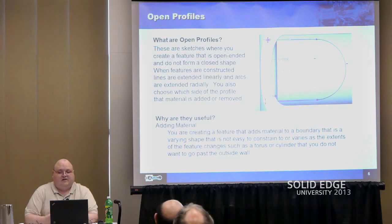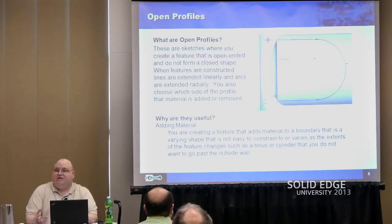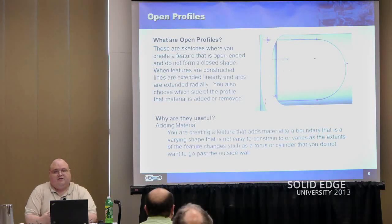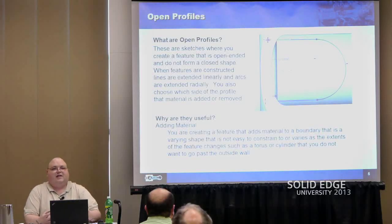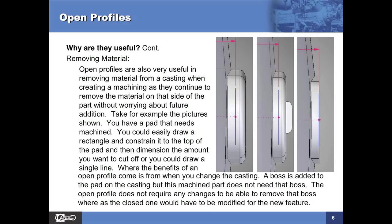When adding material, you can use open profiles to add material that goes to a boundary of varying shape that might not be easy to constrain—such as when you're going up against the end of a torus or a cylinder and you want it to fill up to that outside wall, which is a varying shape as it goes up. When removing material, it's also useful.